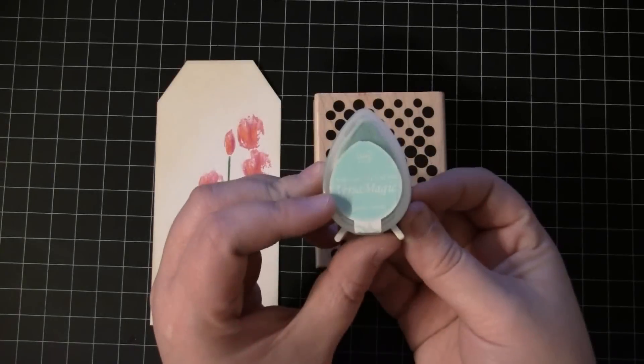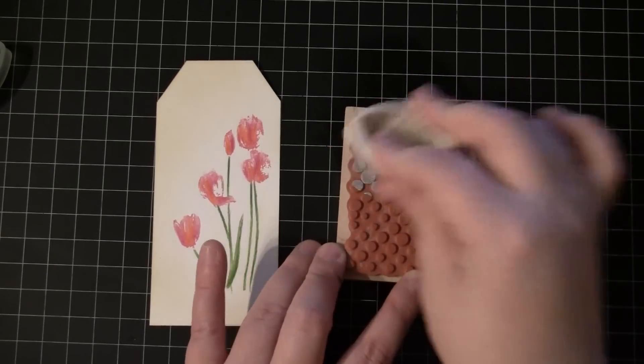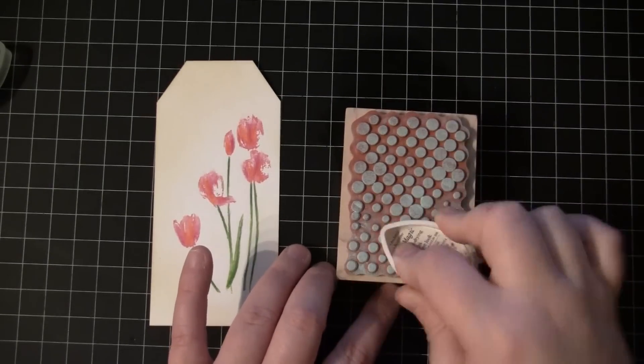All right, and we're ready now for step four, which would be the background stamping. So on this first background stamp, I'm going to use the Versamagic ink in the color of Aquatic Splash. And I chose the Versamagic ink because this background stamp has a lot of solid area.